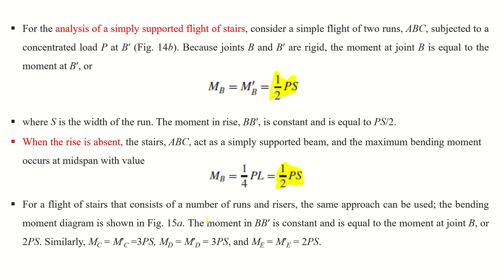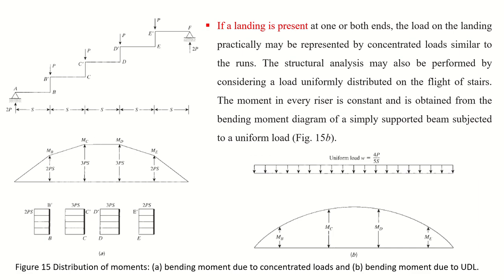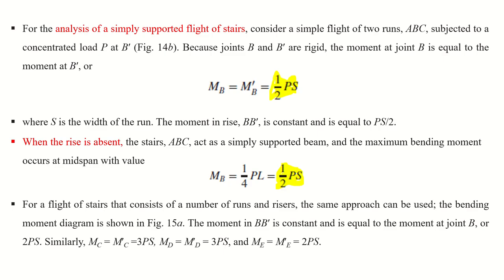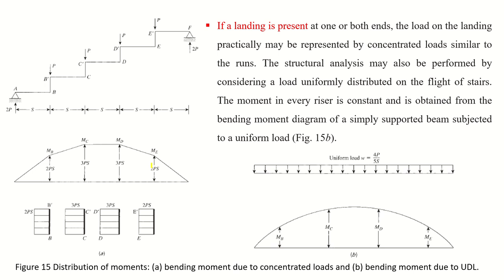For a flight with multiple runs and risers, the same approach applies. The bending moment diagram shows the moment in each riser equals the moment at the adjacent joint — for example, Mc = Mc', Md = Md', Me = Me'. At the midspan joint, the moment is 3·P·s because that joint resists load from two adjacent runs, while end joints carry 2·P·s.